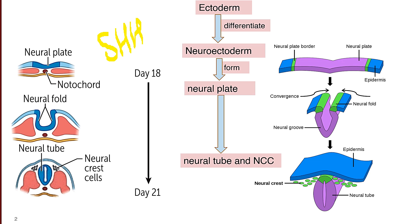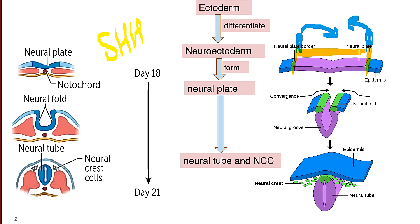On our left we can see how this neural plate is differentiating into neural tube and neural crest cells. The neural plate, which is a flat plate, has two boundaries or limitations — these are the neural plate borders. From these two extreme borders of the neural plate, they start overgrowing on their lateral borders, growing towards each other, so this simple plate converges into a groove.